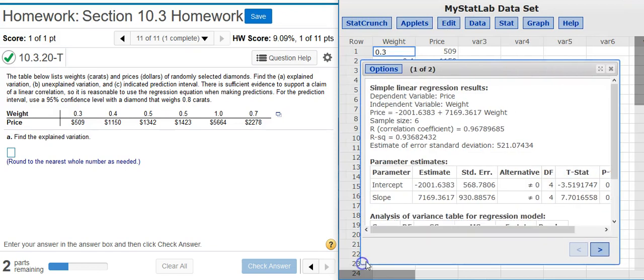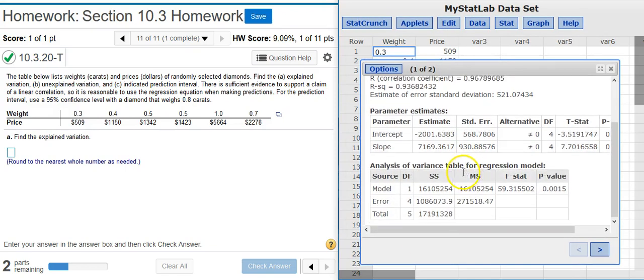And here in my Results window, if I scroll down here to the bottom, here's my Analysis of Variance, or ANOVA table. So, the explained variation is going to be the sum of the squares, that's this SS that you see here, for the model.